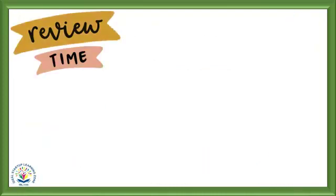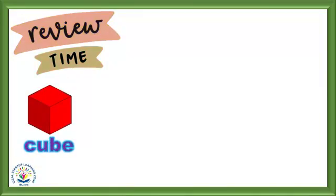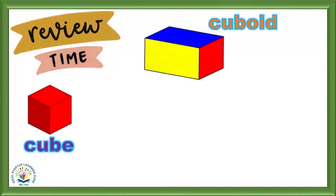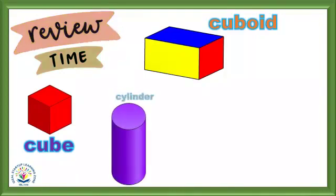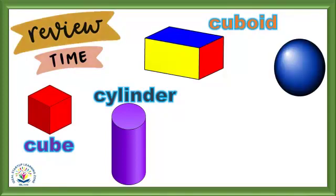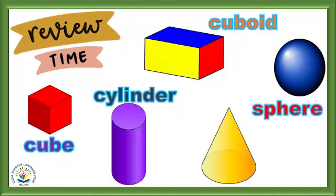Let's recap the shapes we have learned today. First I will say, then you will repeat after me. Cube — cuboid — cylinder — cone. So how many 3D shapes have we learned today? We have learned 5 3D shapes!